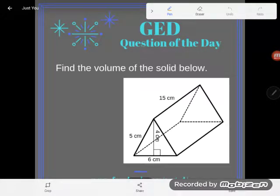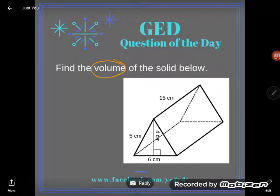Hey GED students, it's GED question of the day time and luckily we have a straightforward problem. They tell us exactly what we want today. It says find the volume of the solid below, so we know we're finding volume and we can see our little three-dimensional solid below.